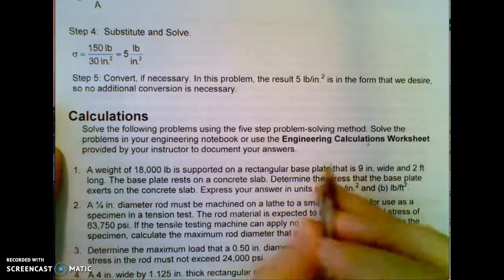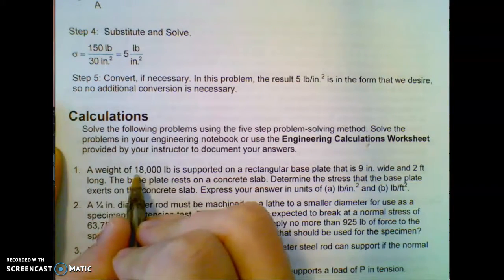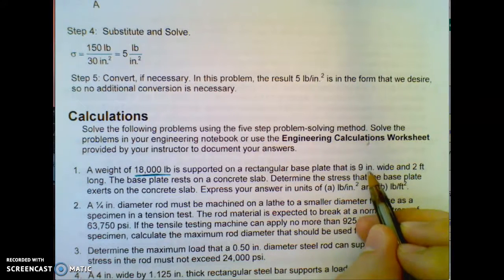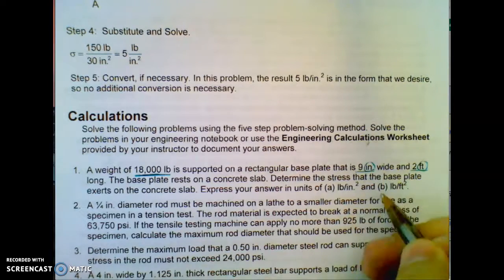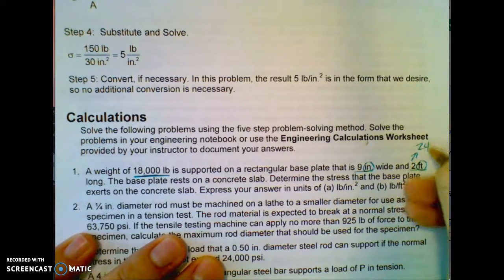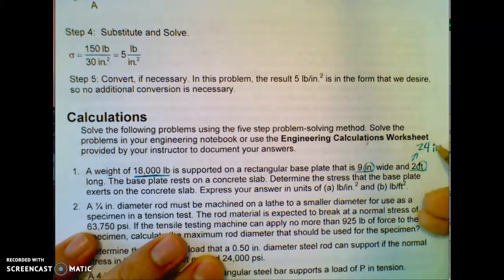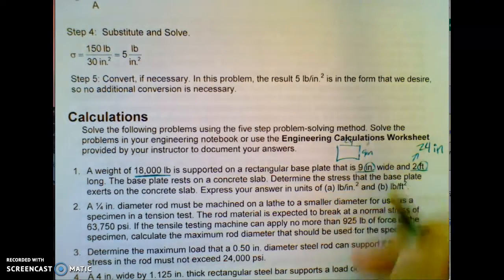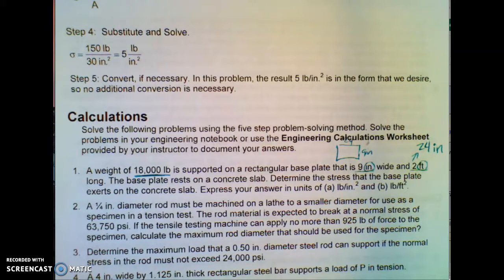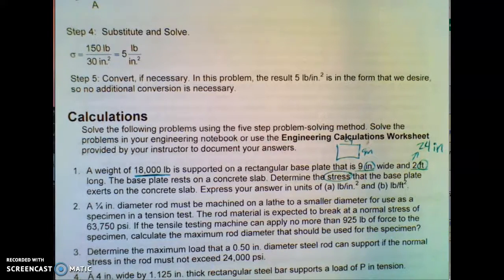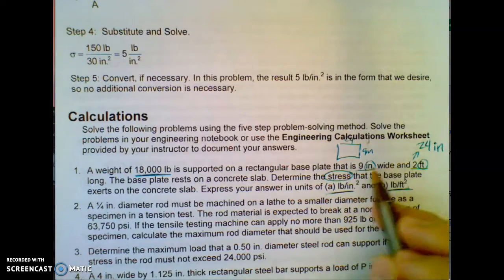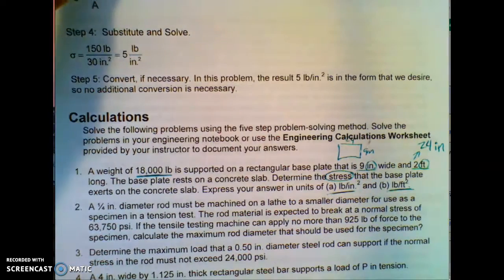As I read problem number one, I want to notice, highlight whatever is important. So I have a weight of 18,000 pounds supported on a rectangular base plate that is nine inches wide and two feet long. Now this is something to watch out for right away. I notice the difference in those. I probably want to turn that into 24 inches before I even move on. So always be careful to watch your units. That's why I'm pretty crazy about making sure you put it in there. So we have a rectangular base plate, nine by 24 inches. And the base is on a concrete slab. Determine the stress that the base plate exerts on the concrete slab. So I see the word stress. We want pounds per inches squared and then pounds per feet squared. So we're going to have to use the inches first, and then the second time we do it, we'll turn that into feet.